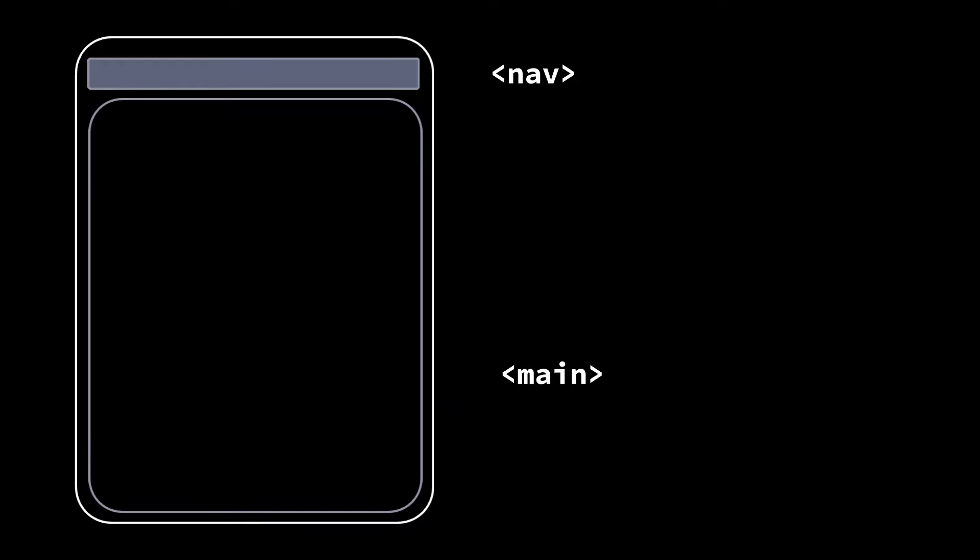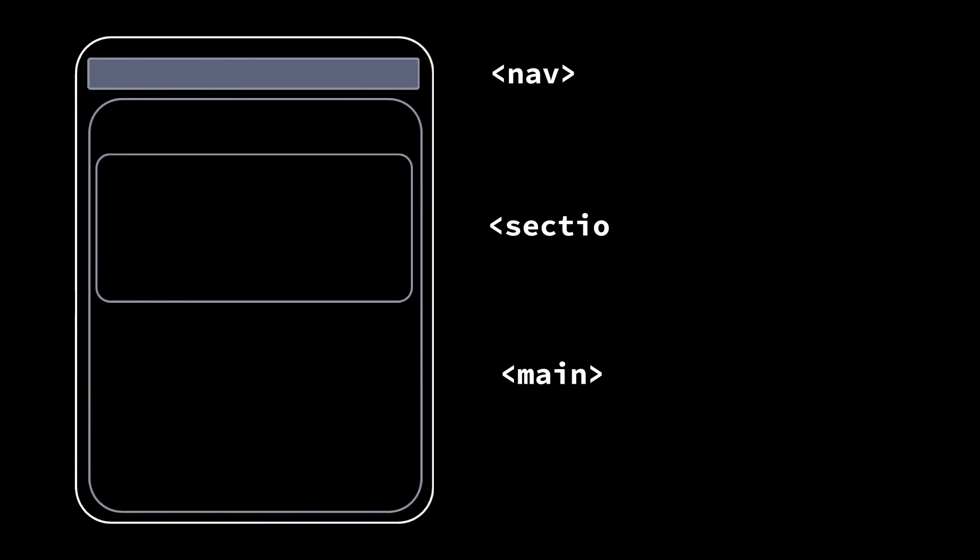A landmark is a subsection of the page which is important enough that it will help the assistive technology to navigate through the page and find the relevant content. You can create a landmark role by adding an HTML tag such as section, nav, or main.